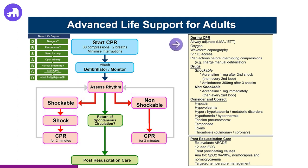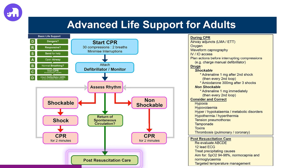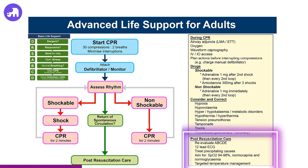Airway management: secure the airway using advanced techniques and equipment such as an ETT if possible and appropriate. Establish intravenous or intraosseous access for drug administration. Depending on the rhythm and clinical context, prepare to administer the appropriate drugs such as adrenaline or amiodarone. Regularly check the cardiac rhythm and the presence of a pulse after cycles of CPR. If return of spontaneous circulation is achieved, provide post-resuscitation care including optimising ventilation and oxygenation and maintaining blood pressure. Re-evaluate the patient systematically and treat precipitating causes of the arrest.